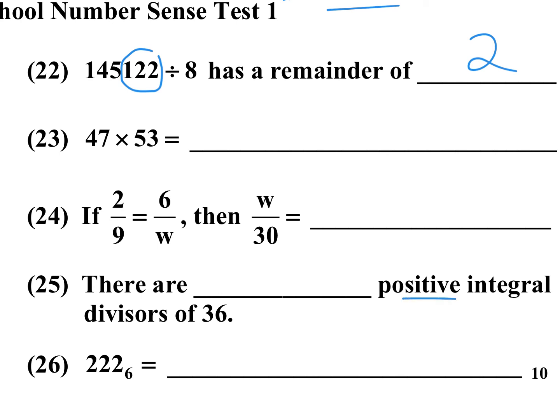Number 25: how many positive integer divisors does 36 have? In prime factorization form, 36 is 2 squared times 3 squared. Add 1 to each exponent: (2+1) times (2+1) equals 3 times 3, which is 9. There are 9 divisors.